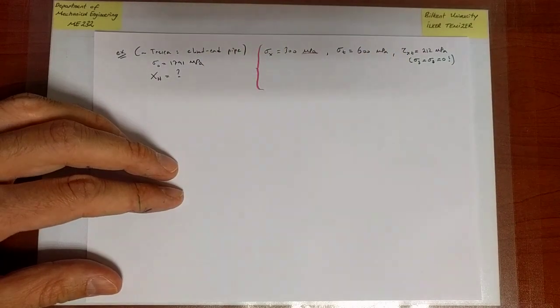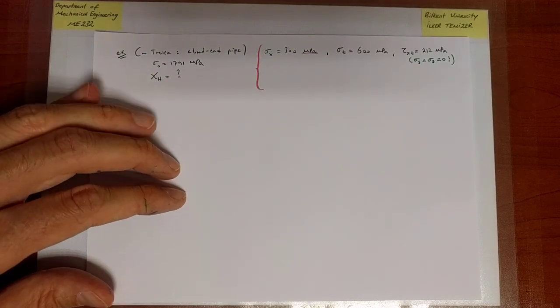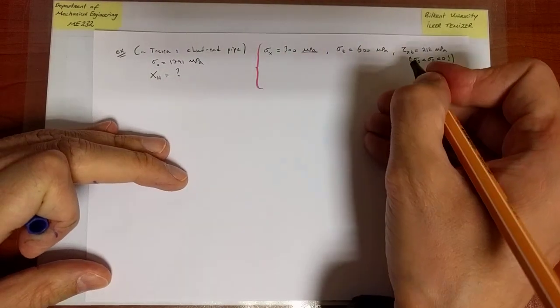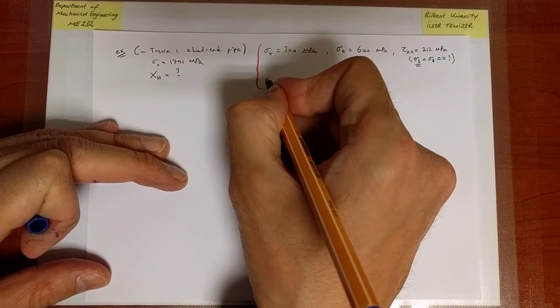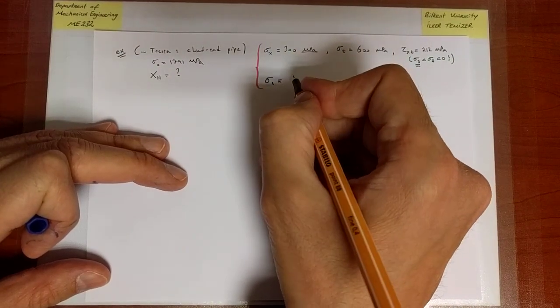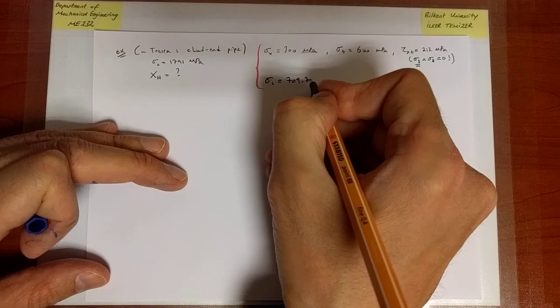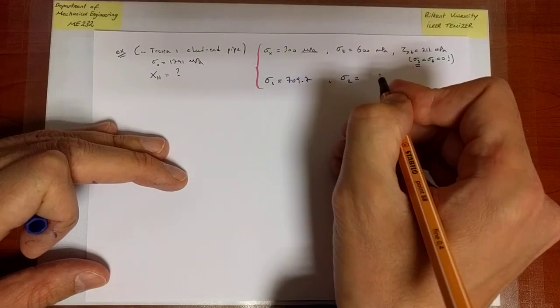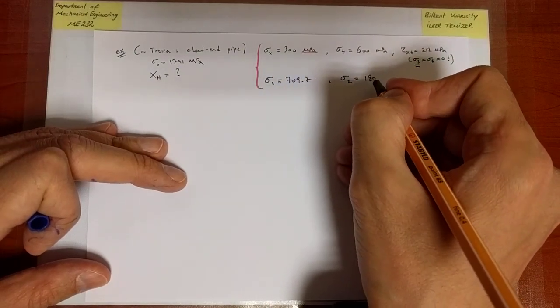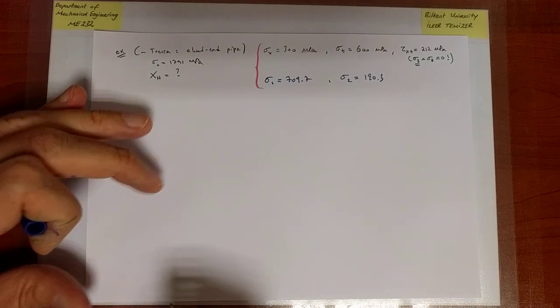Here we would like to remember the values of the principal stresses that we calculated. So sigma_3 equals zero, sigma_1 we found to be 709.7 MPa, and sigma_2 was equal to 190.3 MPa.